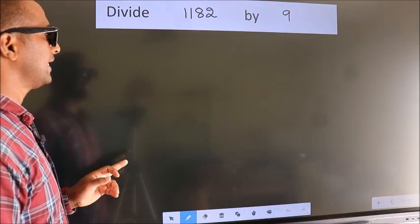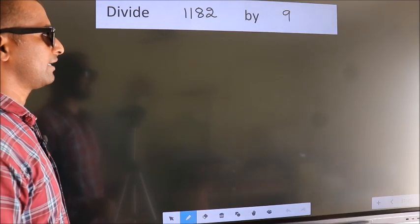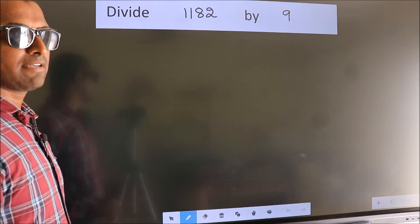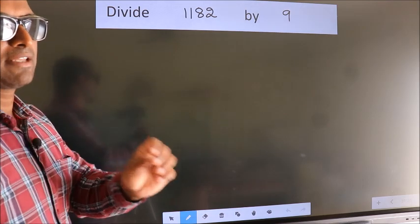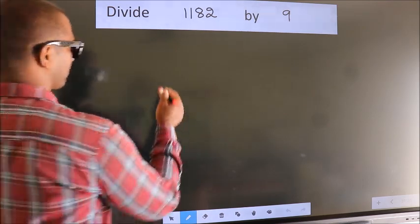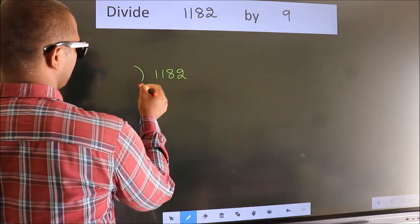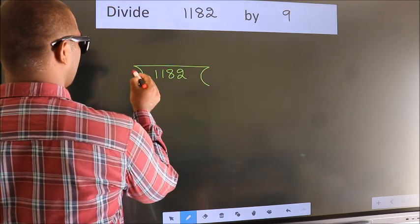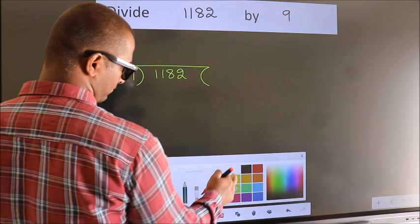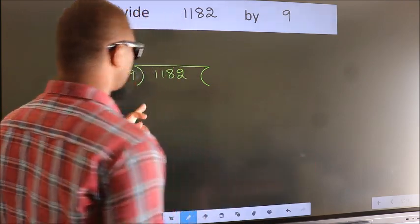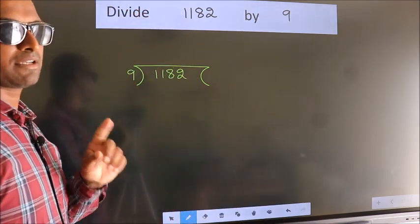Divide 1182 by 9. To do this division, we should frame it in this way: 1182 here, 9 here. This is your step 1.